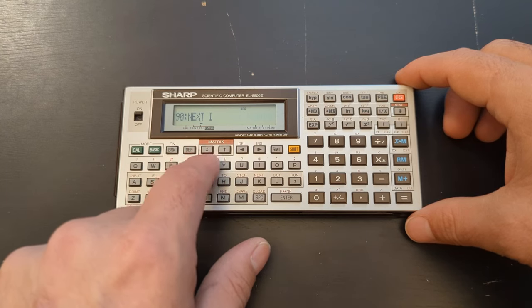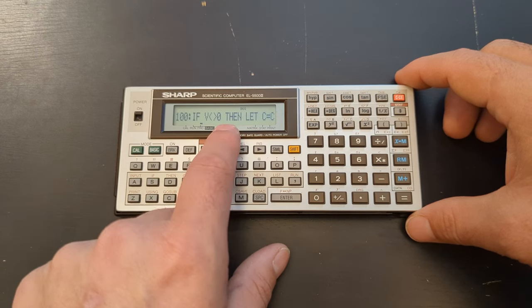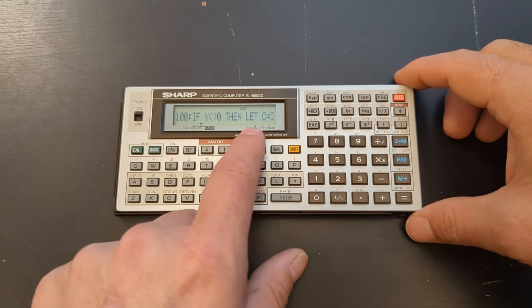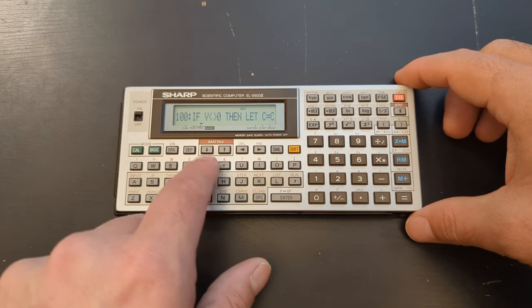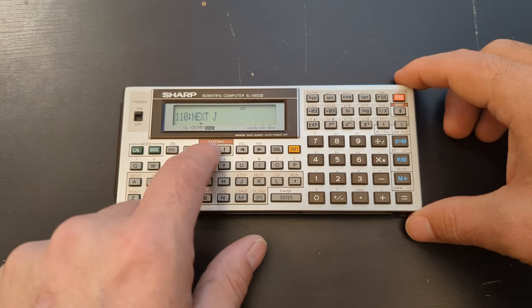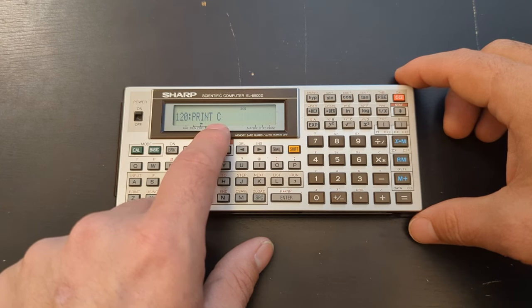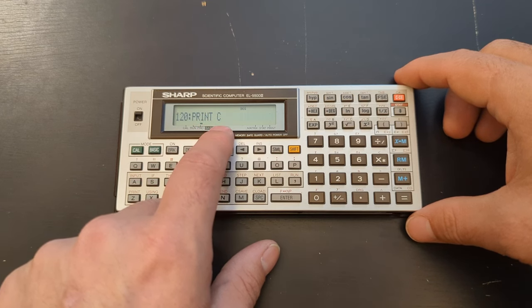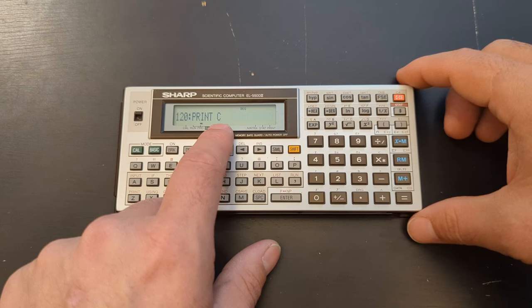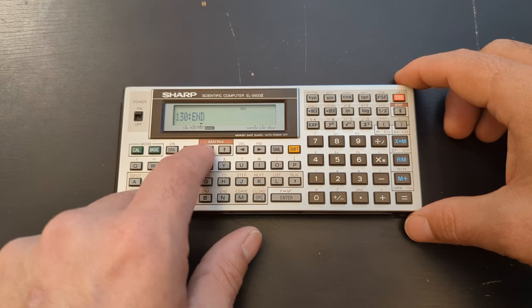So then we have our next i which is the end of our for loop and then we have this test again with the let function word or command. And then we close out our j for loop, we print the count which is the value of c which is the running total of how many prime numbers have been found and then we end the program.